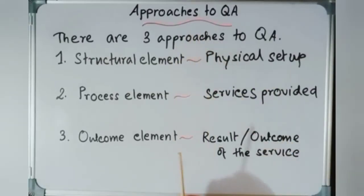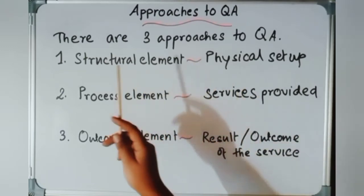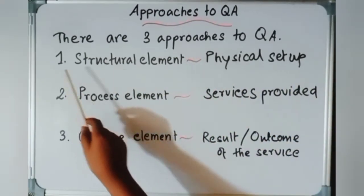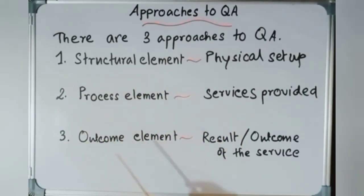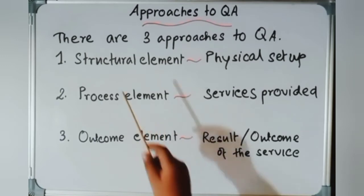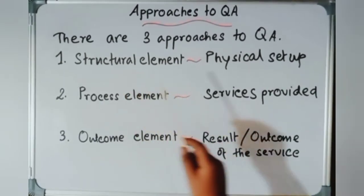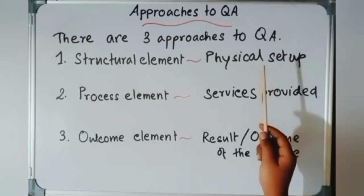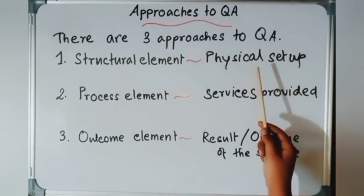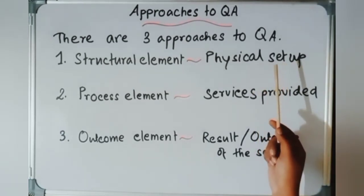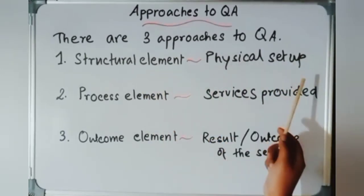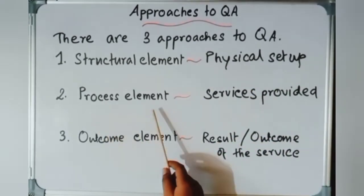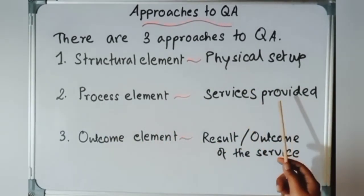Let's talk about approaches. There are three approaches to quality assurance. Number one is the structure element, number two is the process element, and number three is the outcome element. The structure element refers to the physical setup — how you maintain the physical setup and keep it up to the mark. The process element is about what services you are providing and how you are providing them.